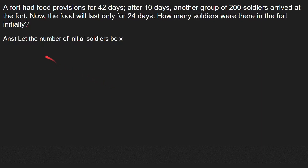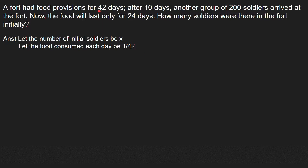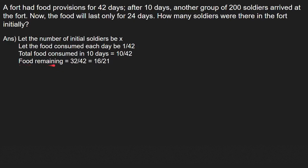Let the number of initial soldiers be x. Let the food consumed each day be 1 by 42, because when there were x soldiers the food would last 42 days — we can verify this: 1 by 42 into 42 equals 1. Total food consumed in 10 days is 10 by 42. Food remaining is 1 minus 10 by 42, which equals 32 by 42, and we can simplify this to 16 by 21.